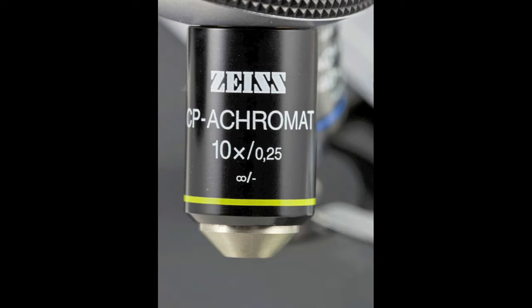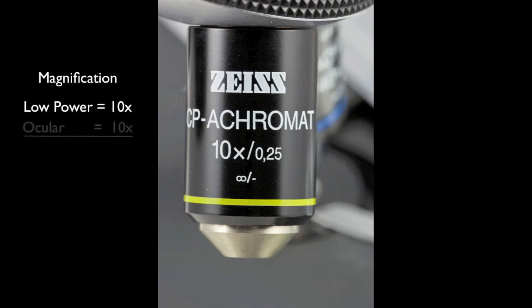The next lens to use is the low power objective, the one with the yellow band. This lens magnifies objects 10 times. The ocular lens magnifies the image 10 times for a total magnification of 100x. When viewing larger objects, this may be sufficient magnification to get a clear view.